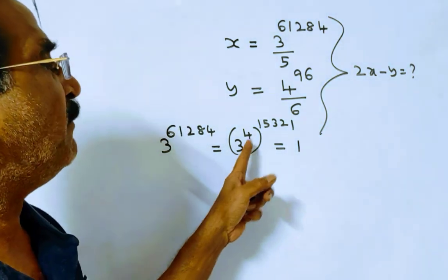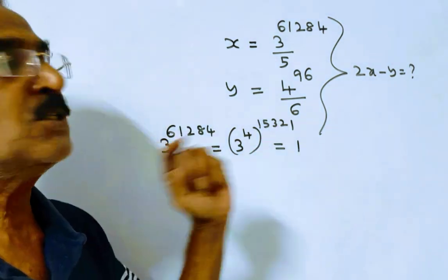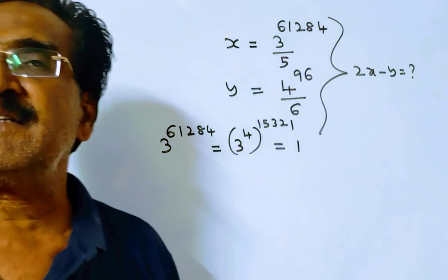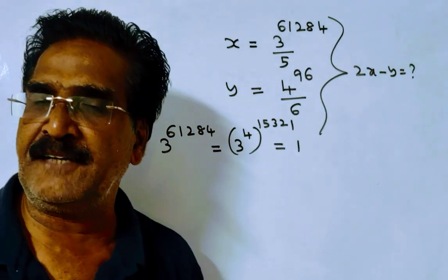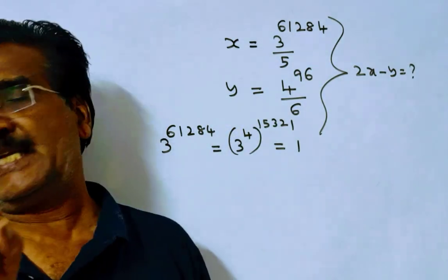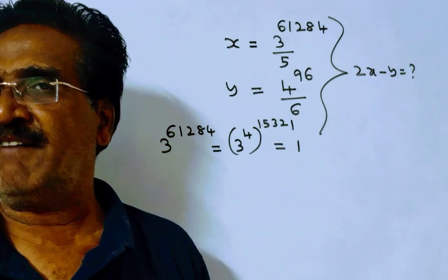So 1 power anything is equal to 1. So when 3 power 61284 is divided by 5, the remainder is 1.